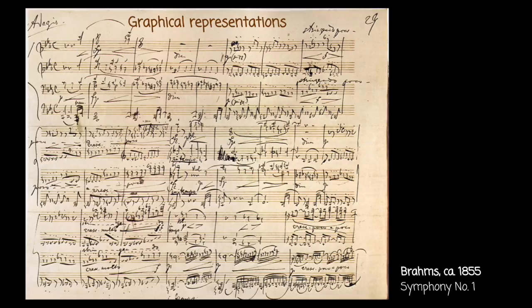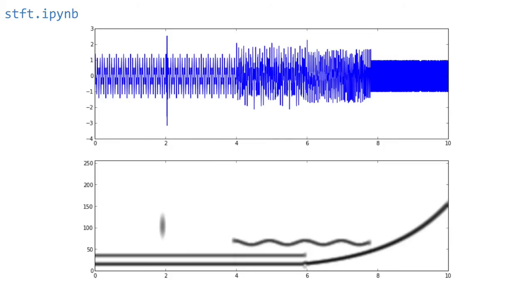So what about different kinds of graphical representations? Well, here's a typical spectrogram. This is in my STFT IPython notebook as I've indicated at the top there, and you'll notice it's slightly sort of fuzzy.